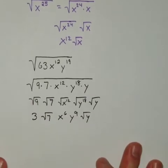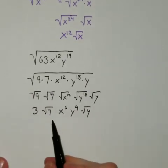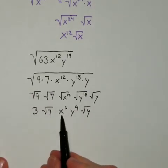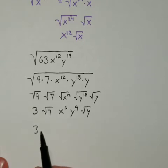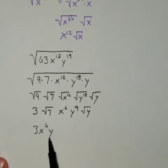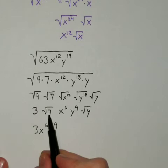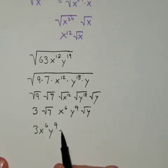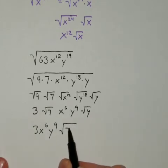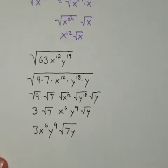Now as a final display of the answer, I want to group together everything that's not under a root, like 3, x to the 6th, y to the 9th. And then I can combine everything that's under a root into the same root. And I get 3x to the 6th, y to the 9th, times the root of 7y.